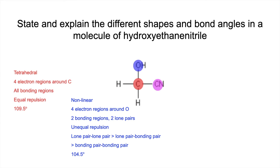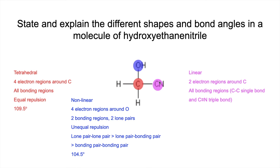The final atom we'll look at is this carbon here. We've got a single bond going to this carbon, but we've actually got a triple bond between the carbon and the nitrogen. The shape will be linear, because we've got two electron regions around the carbon — they're all bonding regions: a C–C single bond and a C≡N triple bond. Remember, a triple bond counts as just one electron region. Because they're both bonding regions, we've got equal repulsion, and therefore the angle would be 180 degrees.